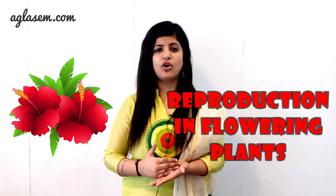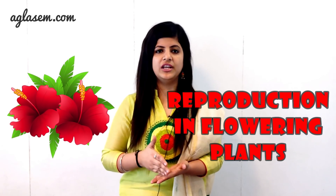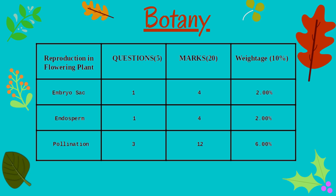The next unit with 20 marks weightage is Reproduction in Flowering Plants. The important topic under this unit is Pollination, with around 12 marks from this chapter alone. The unit name is Reproduction in Flowering Plants, with a total of 5 questions and marks weightage of 20. Topics are: Embryosac (1 question, 4 marks), Endosperm (1 question, 4 marks), and Pollination (3 questions, 12 marks).